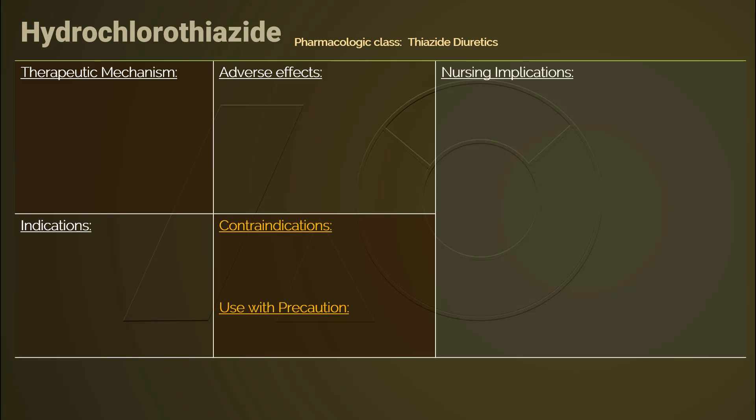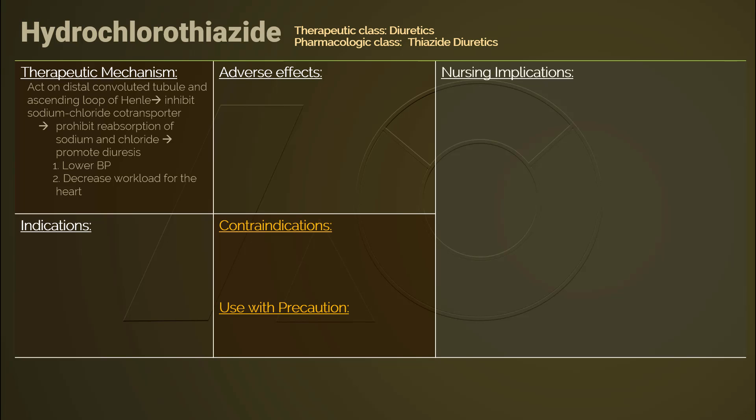Hydrochlorothiazide represents thiazide diuretics and is categorized as a diuretic class. It acts on the distal convoluted tubule and ascending loop of Henle, inhibiting the sodium chloride transporter. Therefore, it stops reabsorption of sodium and chloride, promoting diuresis, decreasing cardiac preload and blood pressure.